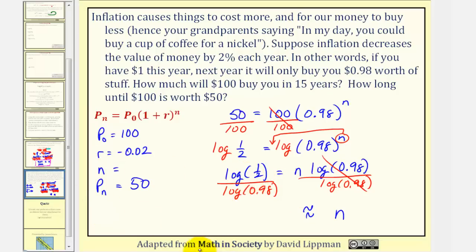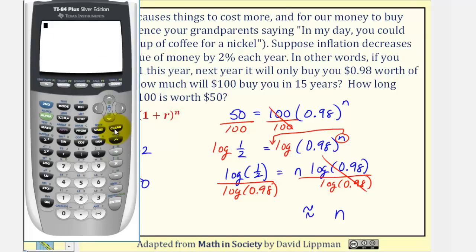And we have log(1/2) or common log(1/2) divided by common log or log of 0.98. So we have n. To round to the nearest hundredth, notice how the answer would be approximately 34.31 years.